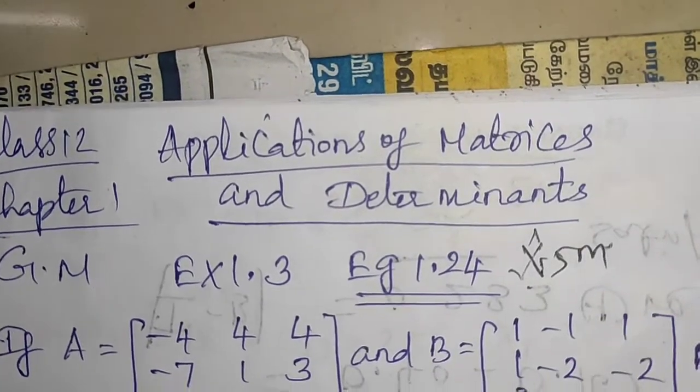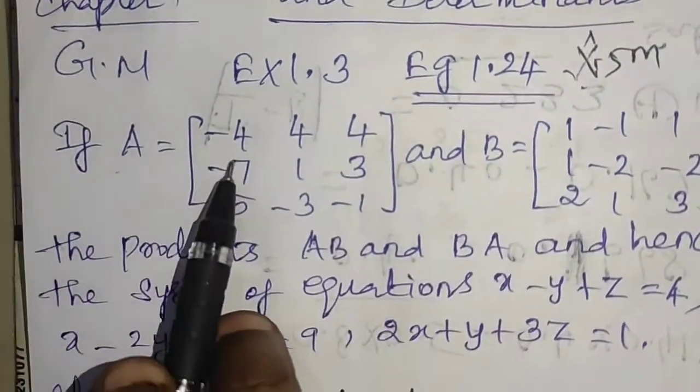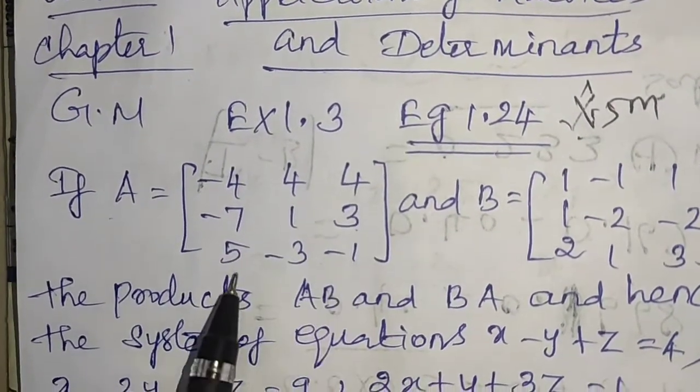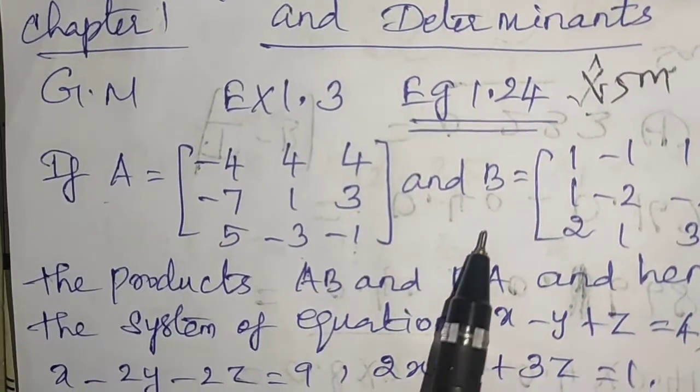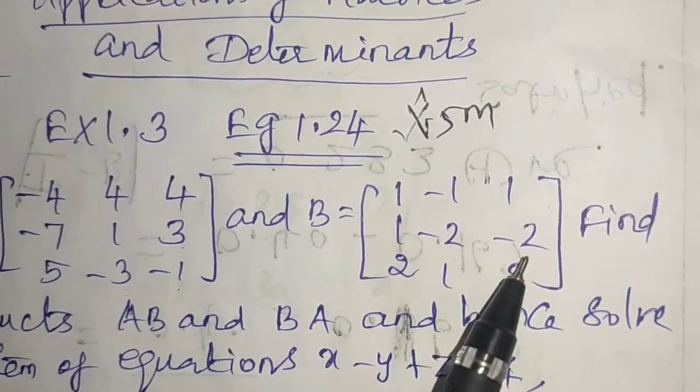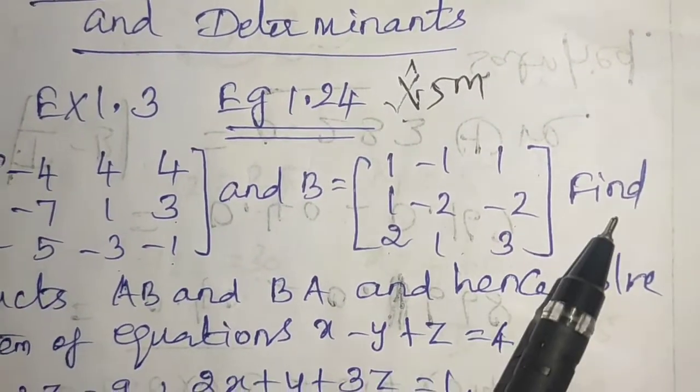If A is equal to the matrix minus 4, 4, 4, minus 7, 1, 3, 5, minus 3, minus 1, and B is equal to the matrix 1, minus 1, 1, 1, minus 2, minus 2, 2, 1, 3.